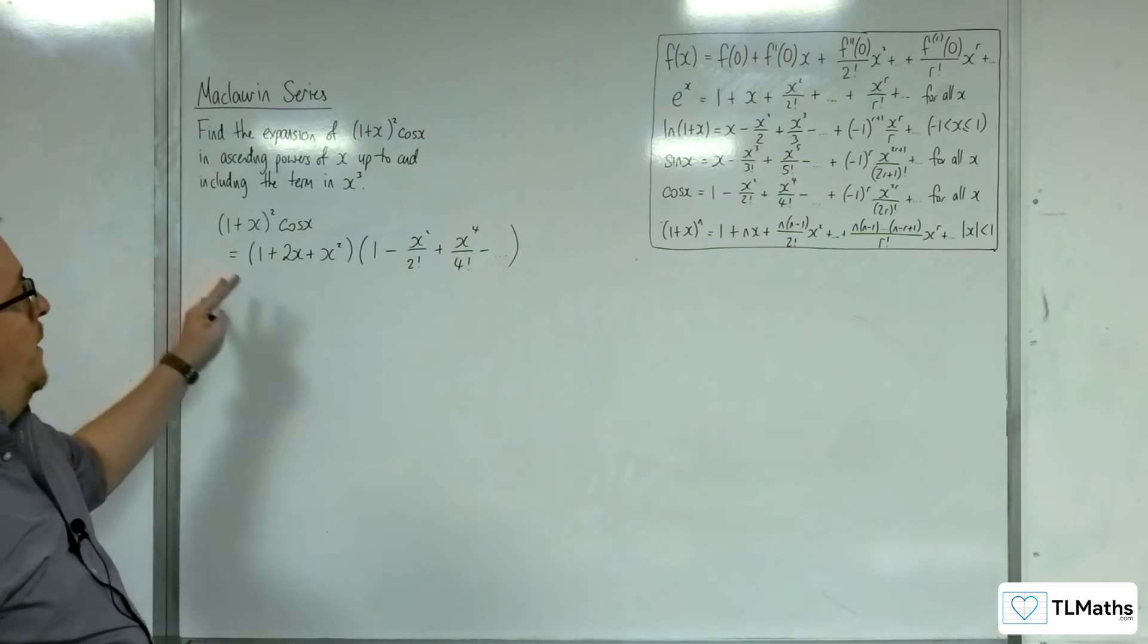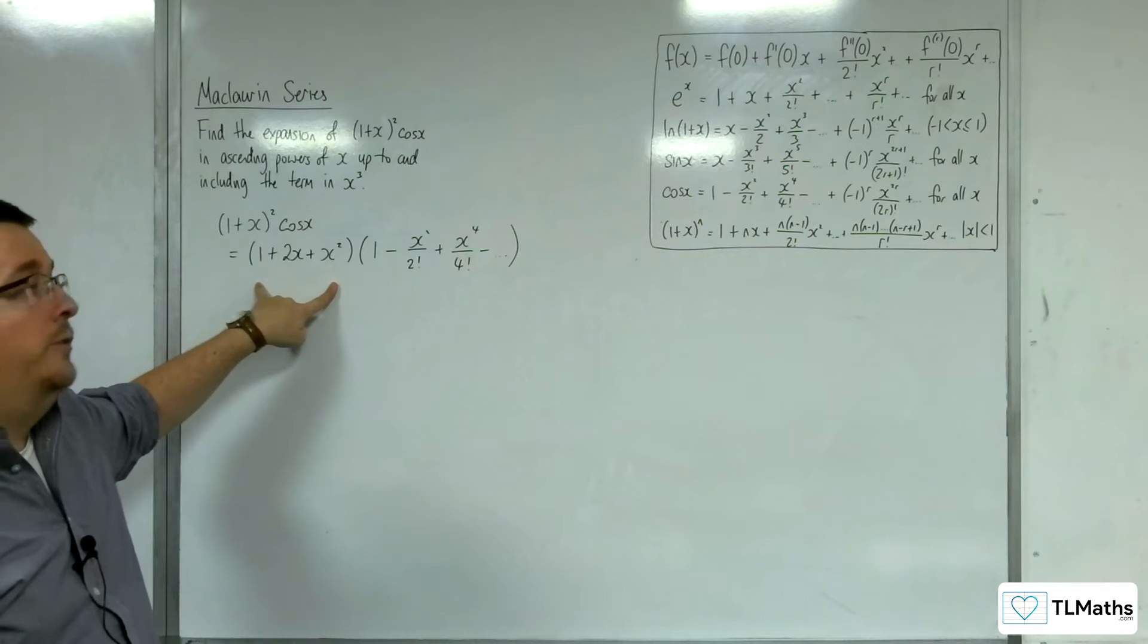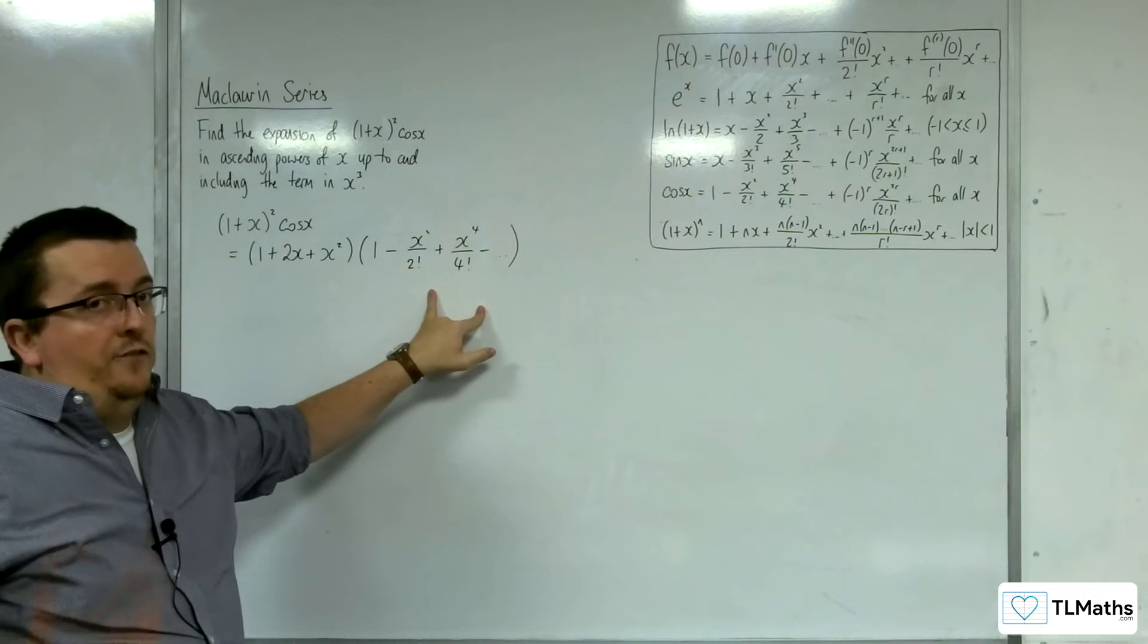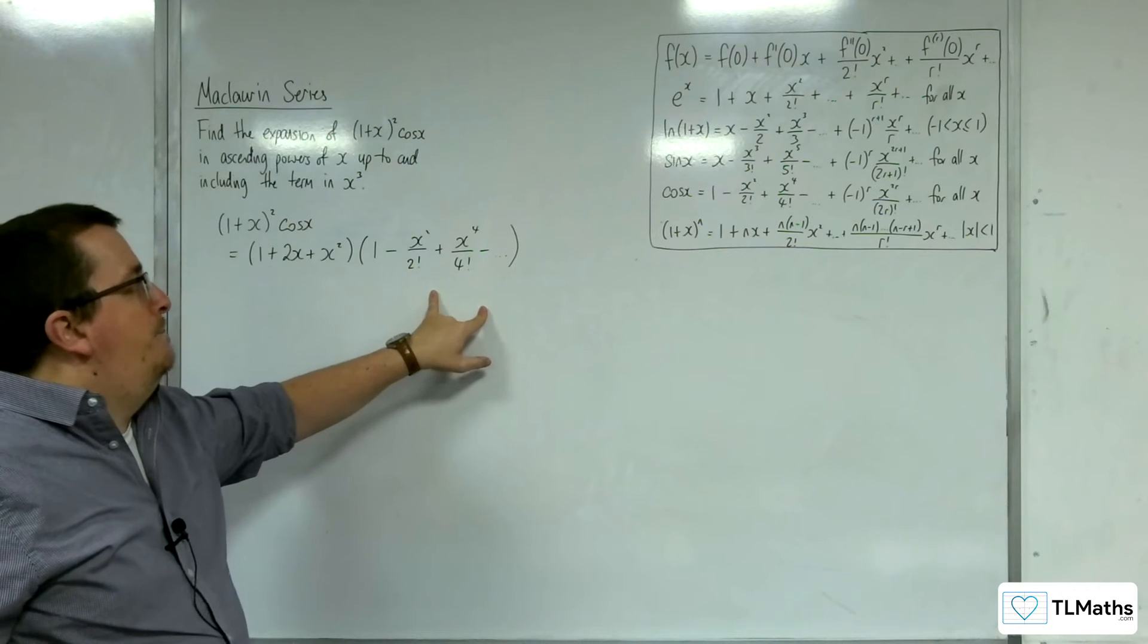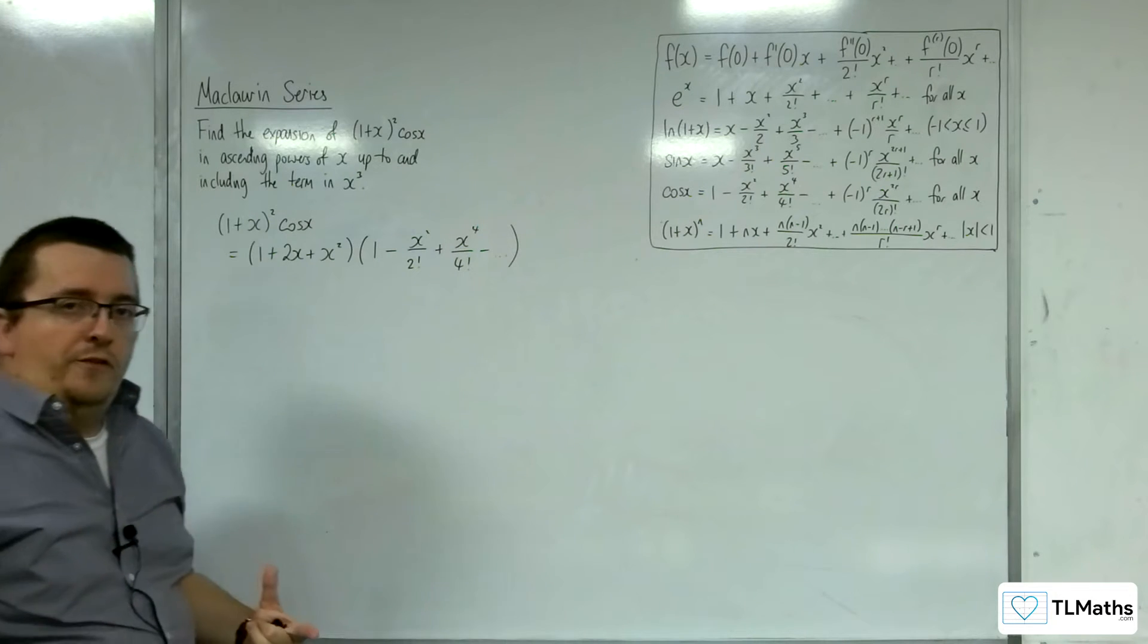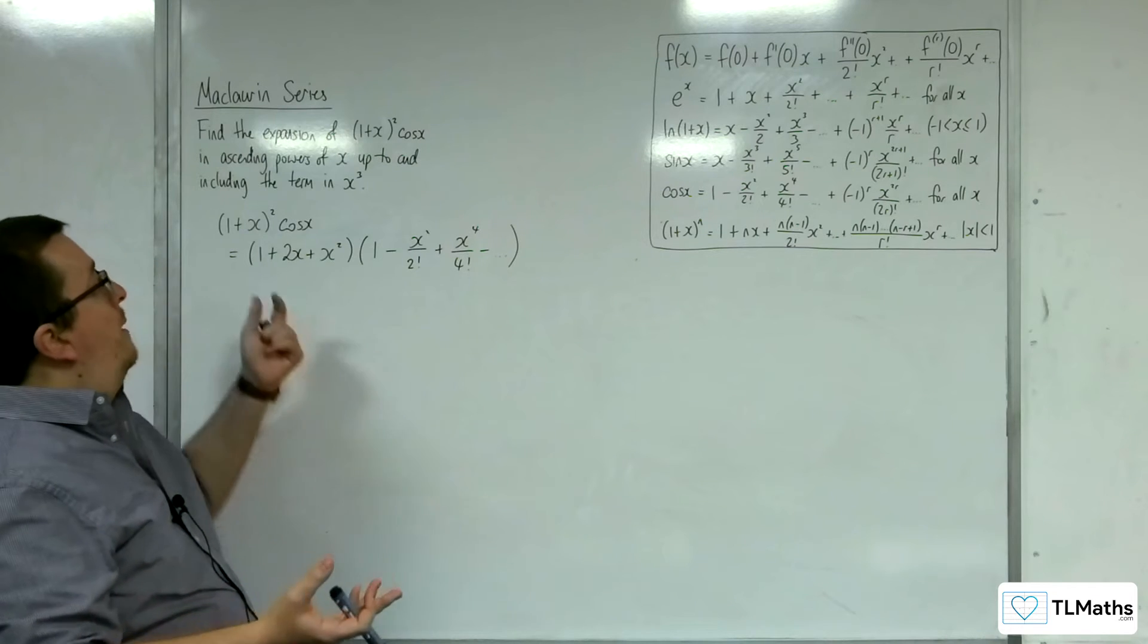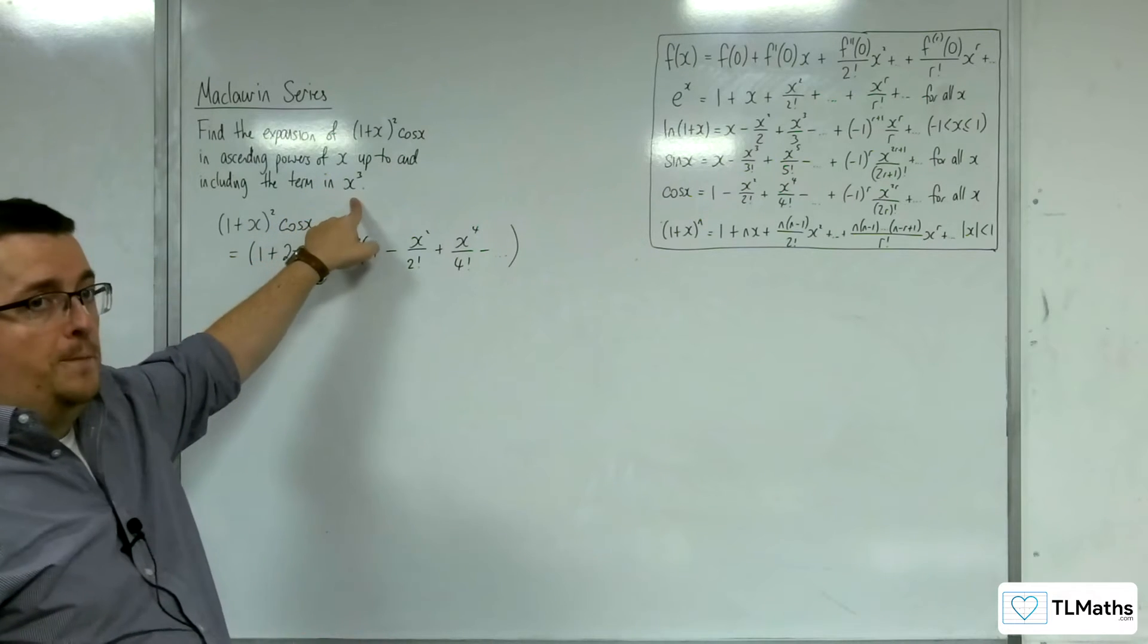Now, what we need to do is expand this out. Obviously, on the left-hand side, we've just got three terms, but on the right-hand side, we've got an infinite number of terms. So there are going to be many terms in there, or an infinite number of terms, that we just can discard, that we're not interested in, because we only want to go up to and include the term of x cubed.